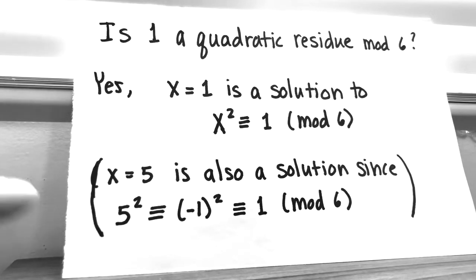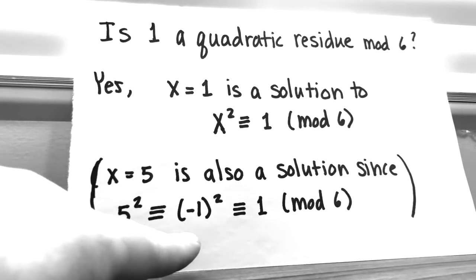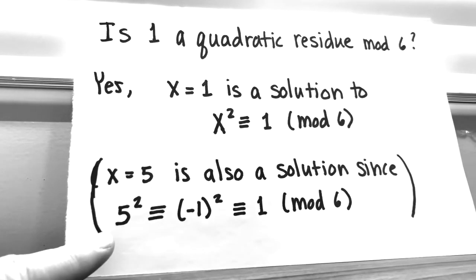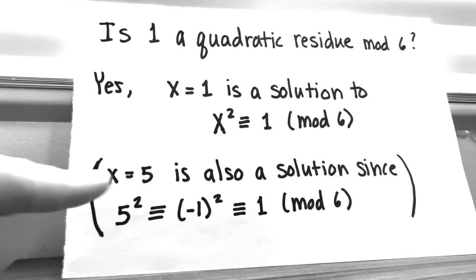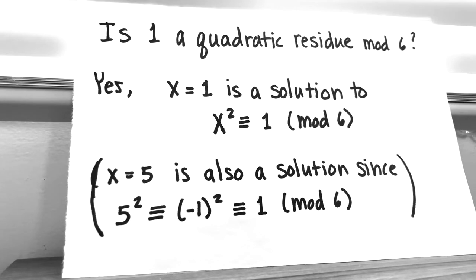It's also worth noting that 1 isn't our only solution. So x equals 5 is also a solution. And the easiest way to see that is observing that 5 is congruent to minus 1 mod 6. So 5 squared is congruent to minus 1 squared, but minus 1 squared is just positive 1 mod 6. So we actually have two different solutions in this case for x.